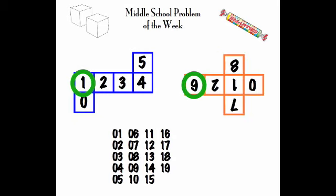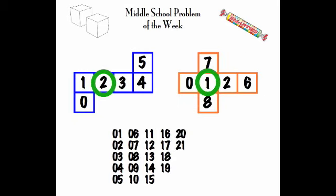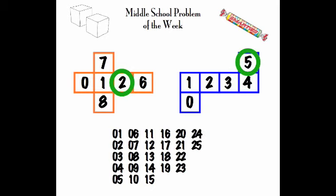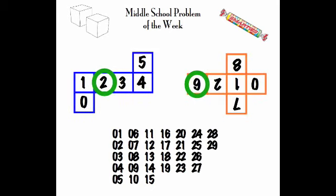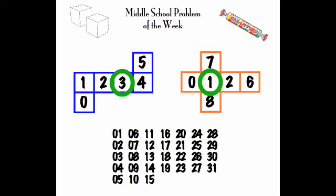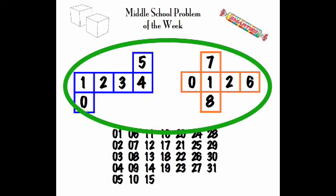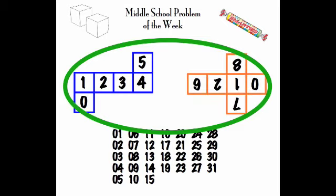Occasionally we have to reverse the cubes, and occasionally we turn one upside down. But when we're all done, we can do all of the numbers 1 through 31. One cube then has 0 through 5 on it. The other cube has 0, 1, 2, 6, 7, 8, and 9 — the answer to this week's problem of the week.